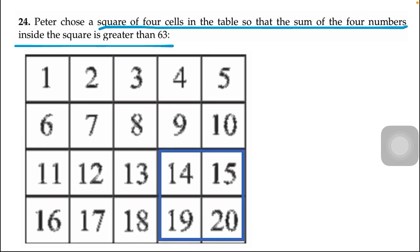First of all I have chosen the bottom right square because it consists of the highest numbers. After adding these numbers the answer is 68. It means this is the correct box because the answer is greater than 63.